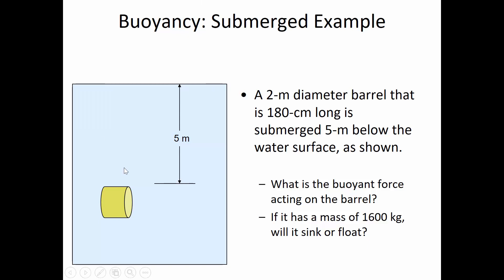The problem gives you the barrel diameter, how long it is, and how deeply submerged it is. We need to find the buoyant force acting on the barrel, and then determine whether it will sink or float if it has a mass of 1,600 kilograms. I'm going to pause the recording and give you a moment to calculate. You need to know the barrel volume; once you've got the volume, you can calculate the buoyant force. What's the decision criterion for whether it will sink or float?